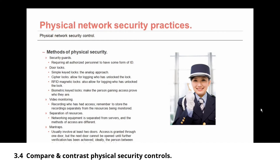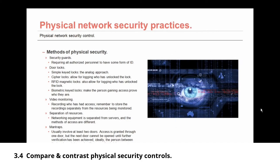Then there are door locks. You could use simple key locks — the analog approach. A slightly more advanced method would be cipher locks with different codes deployed for different areas or different groups of people, which allows for the logging of who has unlocked a door. You might also implement RFID magnetic locks, which also allow for logging. One of the most advanced types of door locks would be a biometric lock — these require the person gaining access to prove who they are through a fingerprint scan, a retinal scan, or possibly even a voice print.